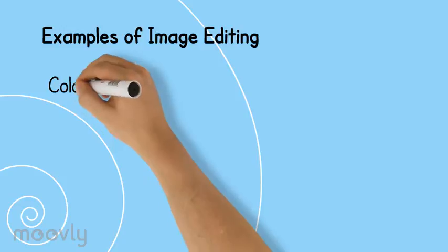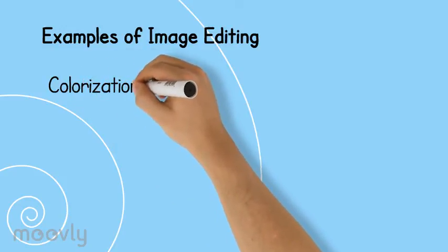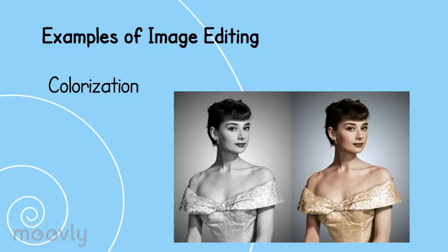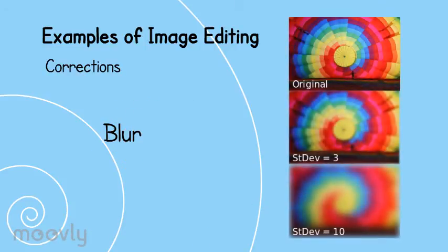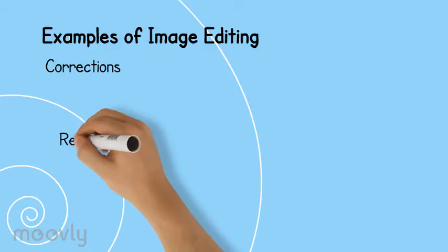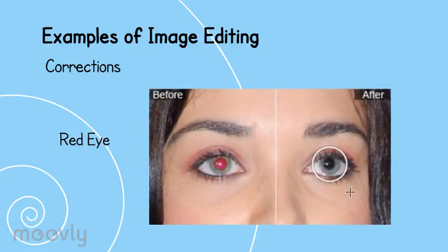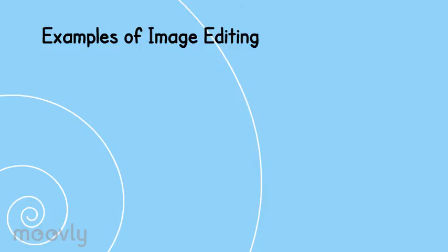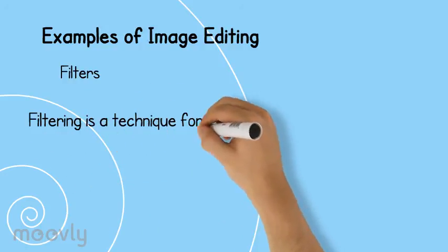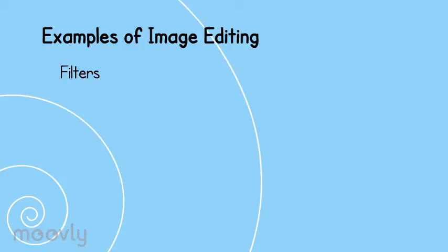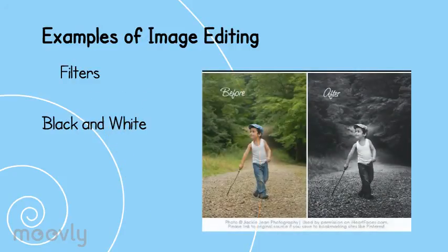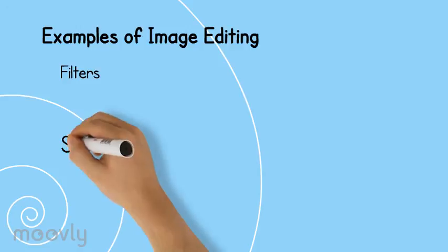One example of image editing is colorization. Colorization is any process that adds color to black and white, sepia or other monochrome images. Blurring is a widely used effect in graphic software typical to reduce image noise and reduce detail. Red eye correction is an effect to remove red eyes caused by a photograph taken with flash. Filtering is a technique for modifying or enhancing an image. Some examples of image filtering are black and white, sepia.